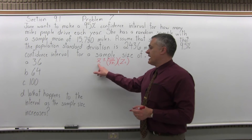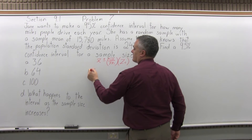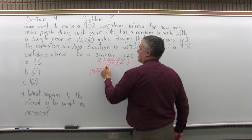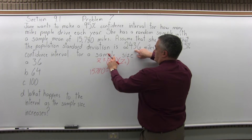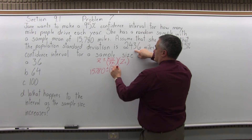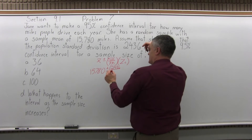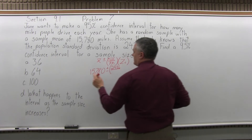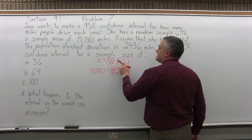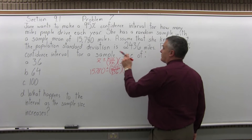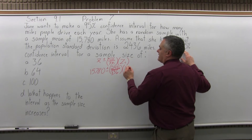Next, let's fill in the formula. X-bar is the sample mean, and it says in the question sample mean of 15,780, plus or minus sigma, the population standard deviation, which is given as 2,436, over square root of n. N is the size of the sample, so the sample size for part A is 36, and it will be square root of 36. Z sub c is the confidence coefficient, which for 95% is 1.96.